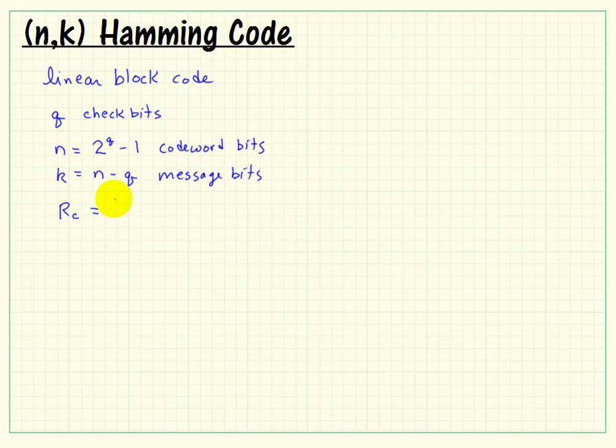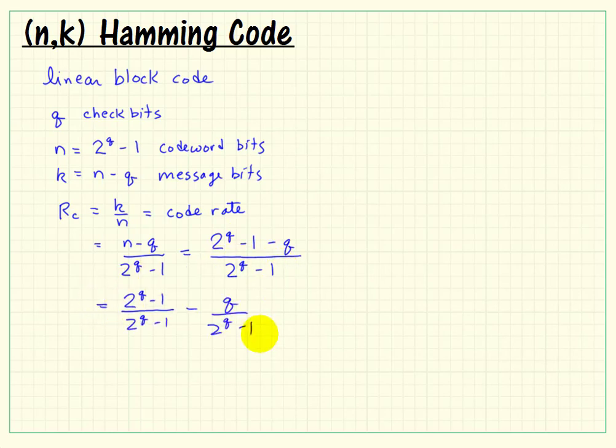The code rate for any block code is always K over N. For the Hamming code, since we have K and N all defined in terms of Q, let's make some substitutions. We know the value of N, and these two are exactly the same, so I can split apart the division and conclude that the code rate is 1 minus Q over 2 to the Q minus 1.